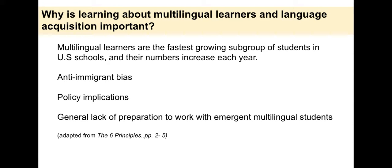Policies often negatively impact multilingual learners disproportionately, whether they be policies related to standardized testing, language use policies, or access to equitable education practices. Policies are often written with an assumption of full English proficiency, which can then lead to increased challenges for emergent multilingual learners.